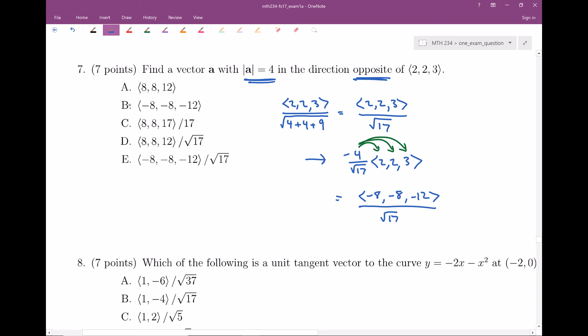So does that match any of them? Well, it's close to B, but it's actually E. So <-8, -8, -12>/√17 is my final answer.